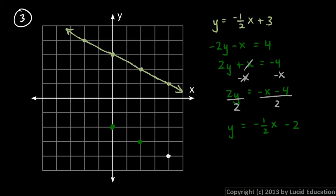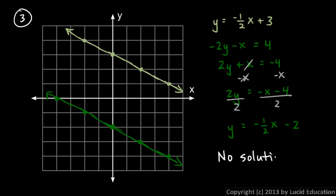So these lines end up being parallel. You can see that if you graph it — they're parallel lines. So there's no solution. You should indicate that on your page — write no solution for your answer. There's no solution because the lines are parallel, as you can see. I'll show you more later — let's go back to the next video.